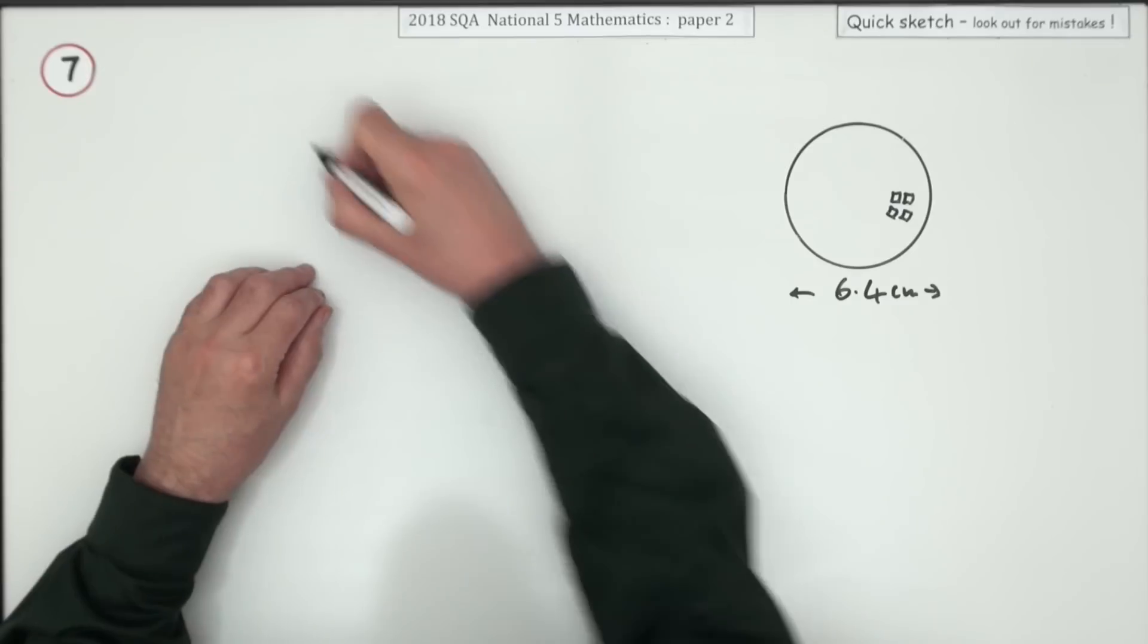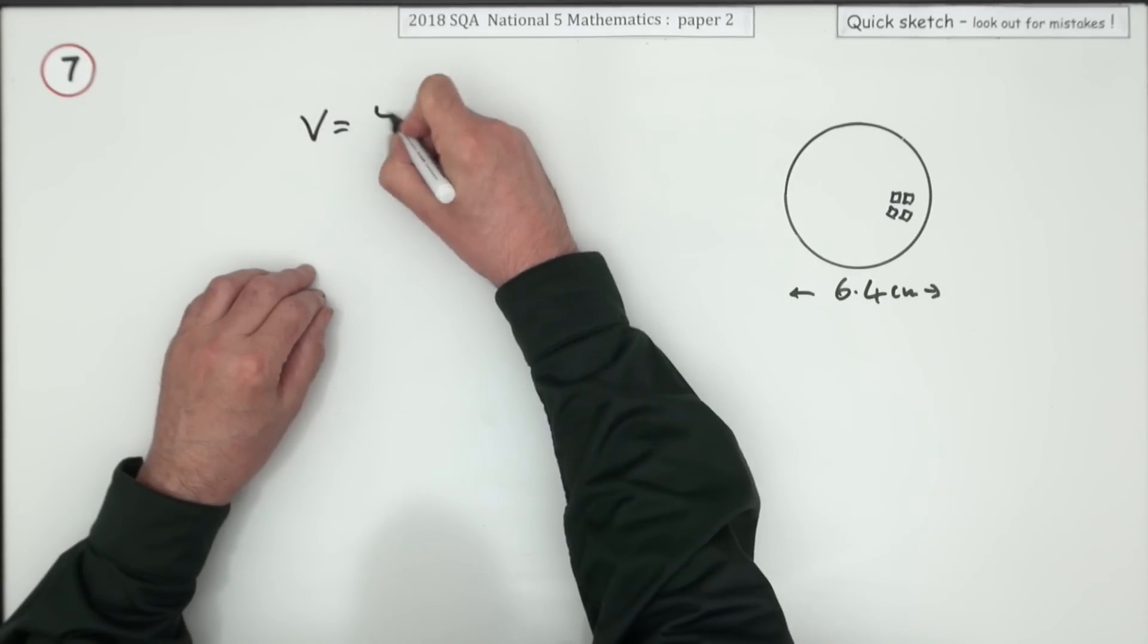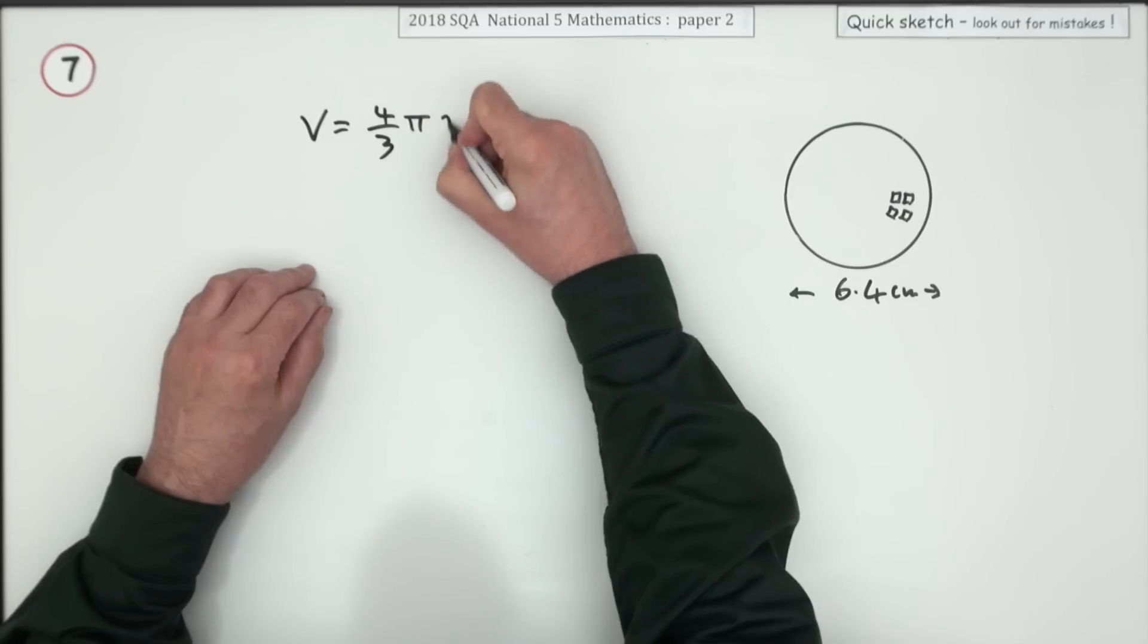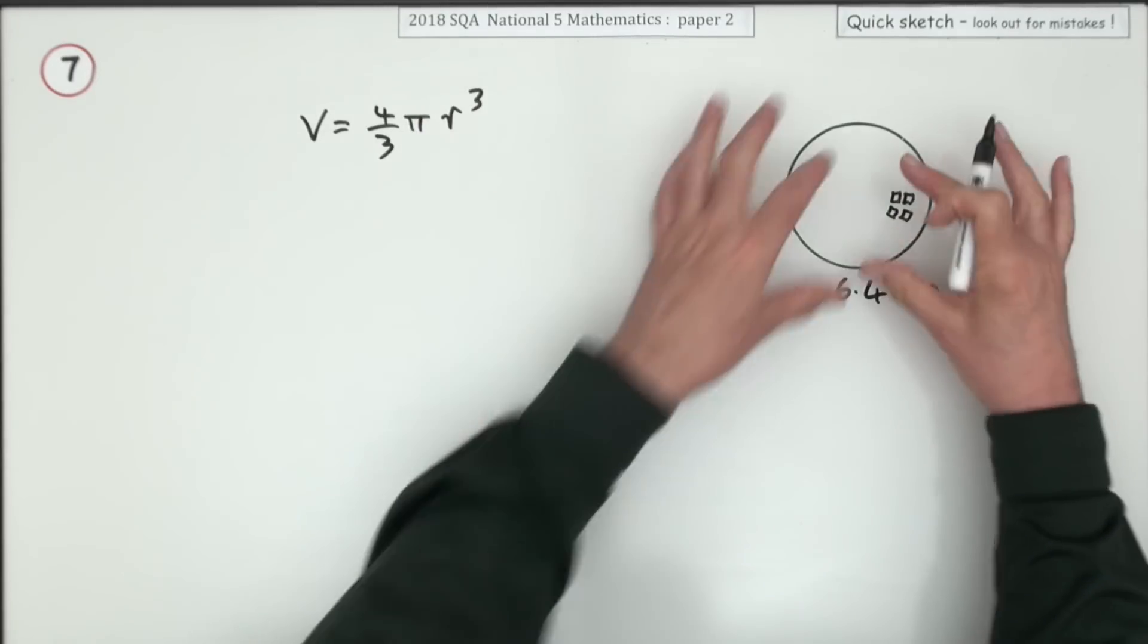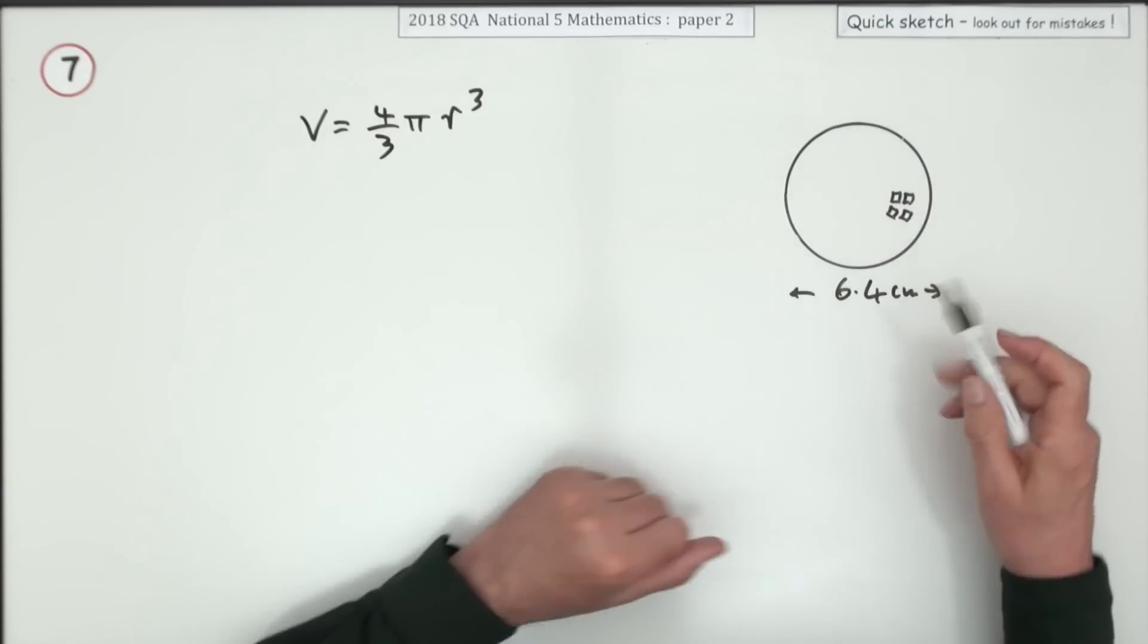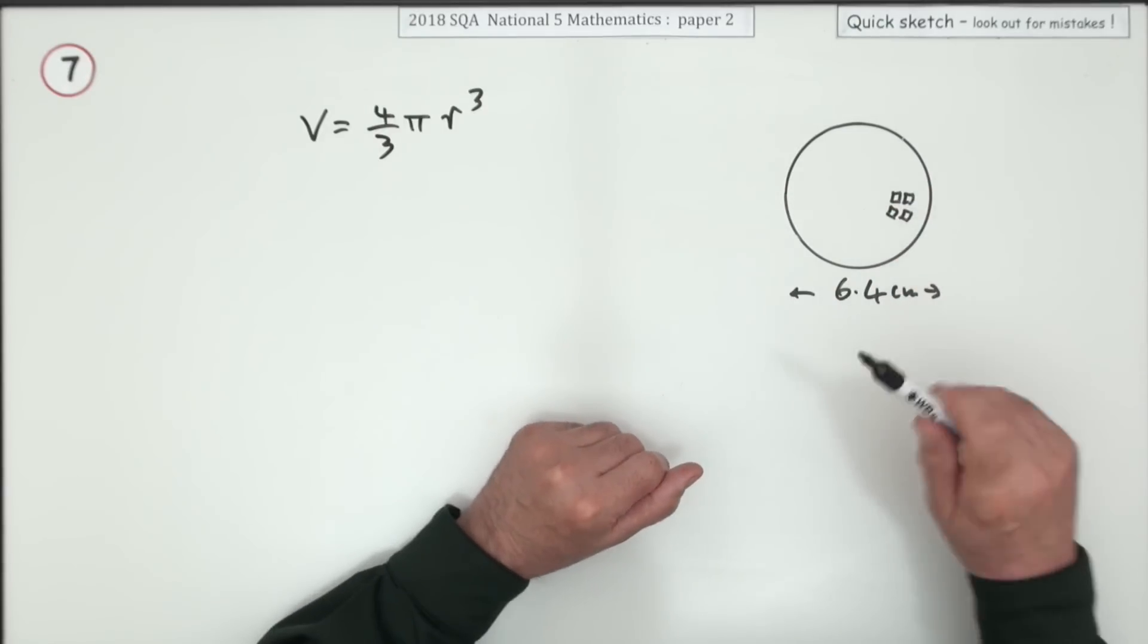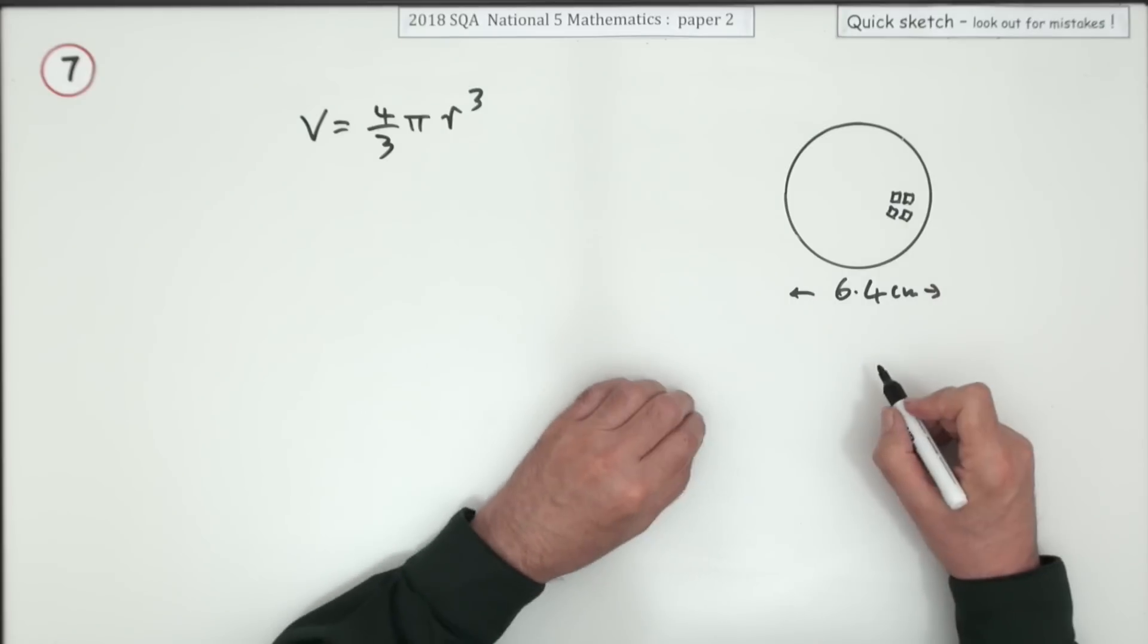What you do is look up the front. You'll find V equals 4 upon 3 pi R cubed. You look at the sphere, that's my little indication it's not a circle it's a sphere. Bit of artistry there.